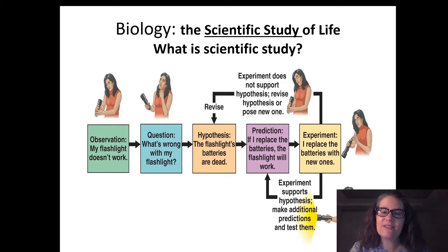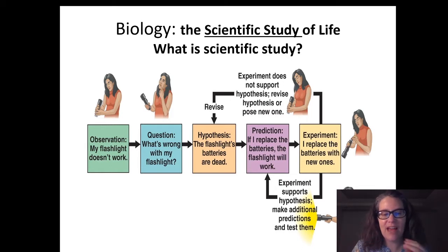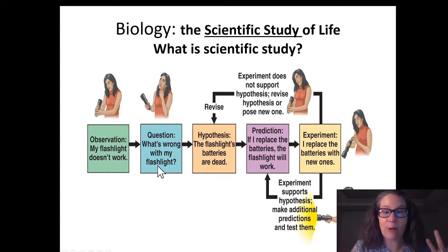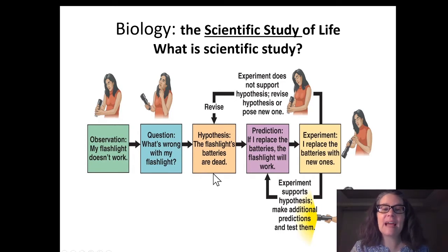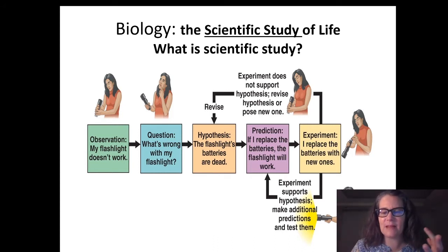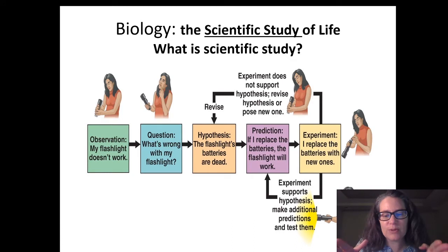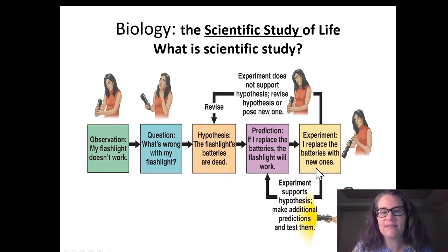So if biology is the scientific study of life, then scientists have to carry out these studies. These studies are a little bit different than what you would do in your everyday life. Most of us make observations, have asked questions about how our bodies work or why something is happening to plants and animals around us. We've even had a hypothesis or a prediction about why something is working the way it is — like if I do this, then maybe this will happen. But what makes the scientific study different is this idea of a controlled experiment.